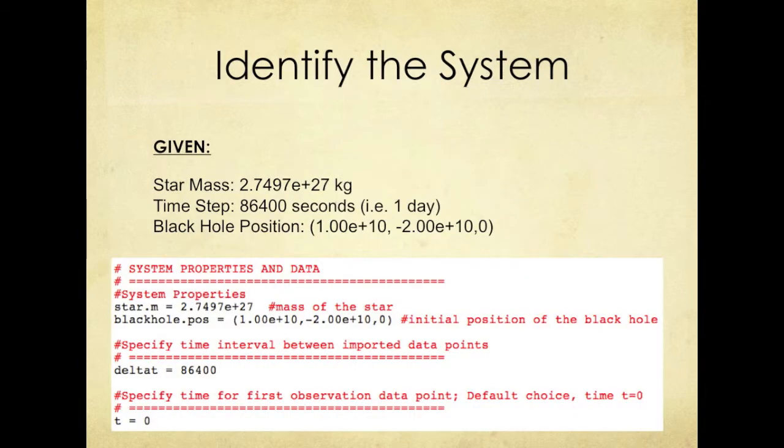Our observational data is as follows. The mass of the star is 2.7497 times 10 to the 27 kilograms. The time step is 86,400 seconds and the position of the black hole is (1.00e10, -2.00e10, 0). We take this data into a computational model that will help us determine the net force acting upon the visible star.